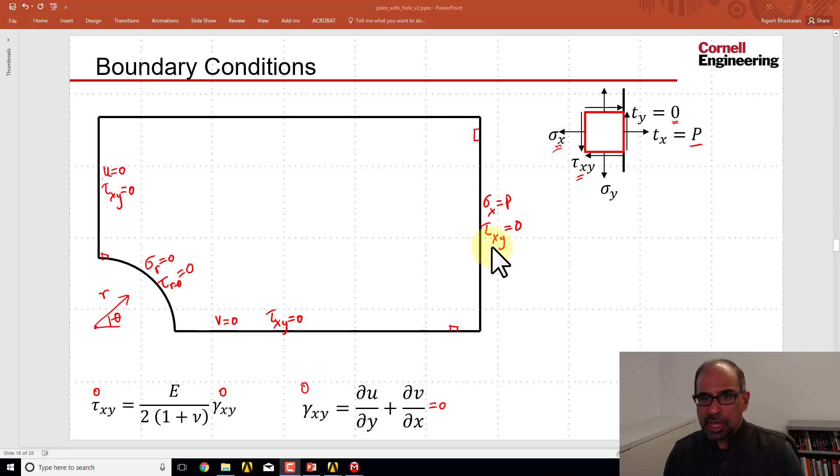Let me start with the right boundary. Now, tau xy equal to 0 comes from the tangential traction being 0. ANSYS by default sets the normal and tangential tractions to 0. That's the default boundary condition. So tau xy is already set to 0 because the tangential traction is set to 0. The normal traction is also set to 0. So right now it has sigma x equal to 0. Let's change it to sigma x equal to p, and p is 20,000 psi in our problem.